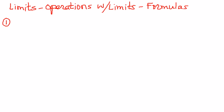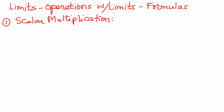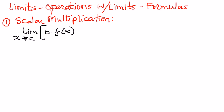The first one I'm going to talk about is called scalar multiplication of limits. If we have a limit of a constant times a function f of x — constant b times a function f of x as x approaches c — we can write this as the constant pulled out of the limit operation.